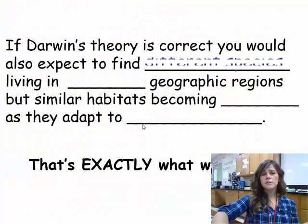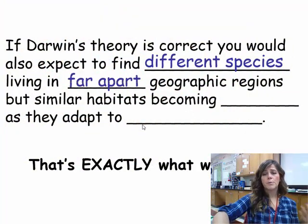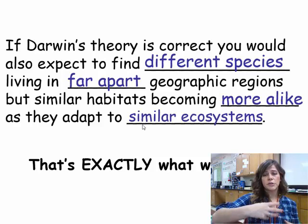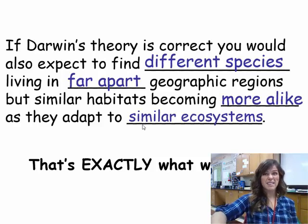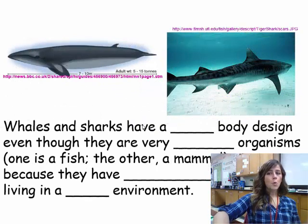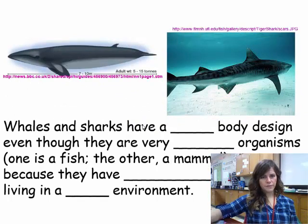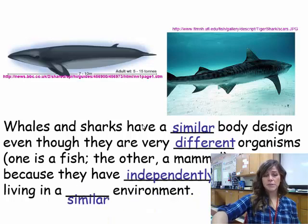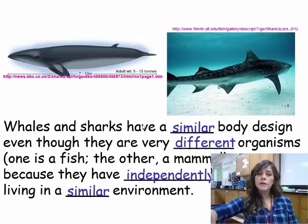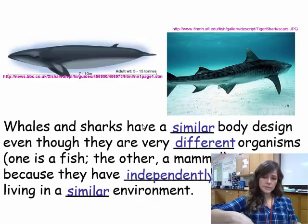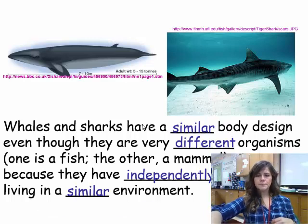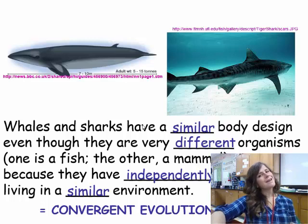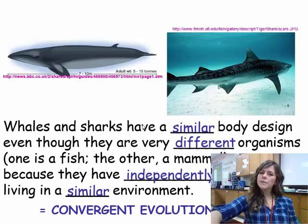If Darwin's theory is correct, you would also expect to find different species living in far-apart geographic regions but similar habitats becoming more alike as they adapt to similar ecosystems - and that's what we see. For example, whales and sharks: one is a mammal, one is a fish, nothing alike, but they have a similar body design because they have independently adapted to living in a similar environment. They look very similar and have similar features just because of the environment they live in. We call this convergent evolution.